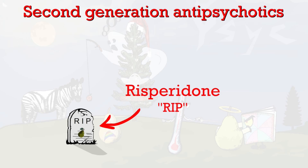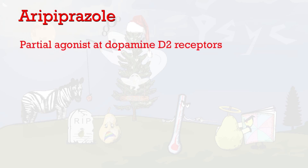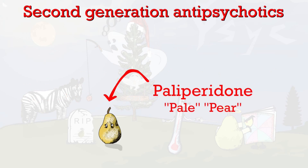Aripiprazole has a slightly different mechanism of action than the other antipsychotics. Instead of blocking the dopamine receptor, it is a partial agonist. Rather than having the full force of dopamine act on certain receptors, it can disrupt areas in the brain where dopamine acts quite strongly. So in essence, although it acts upon these receptors, it causes a less strong reaction than actual dopamine.